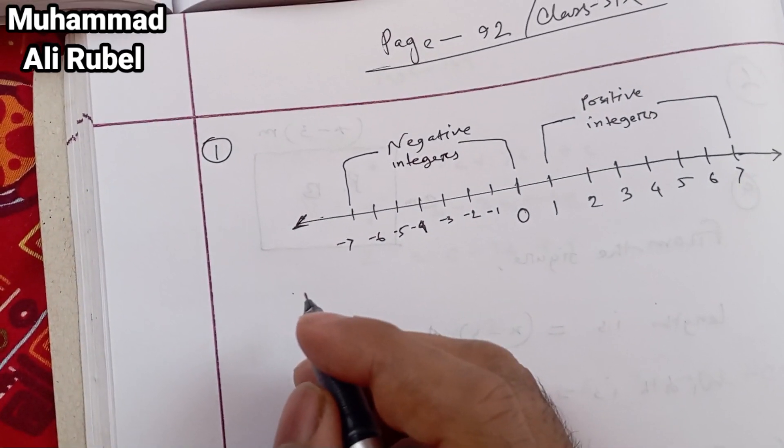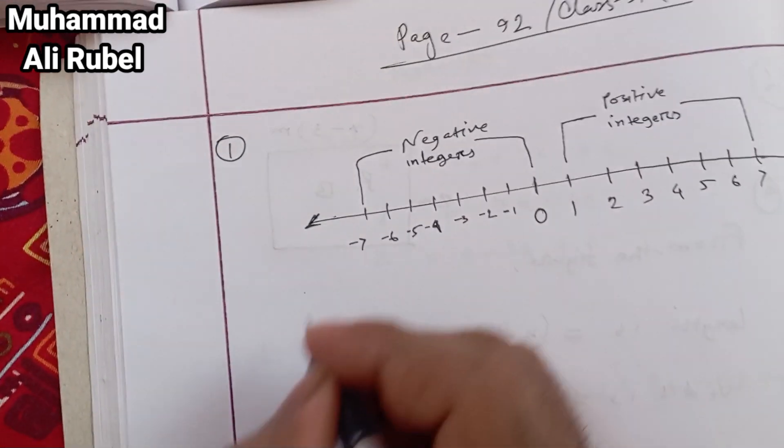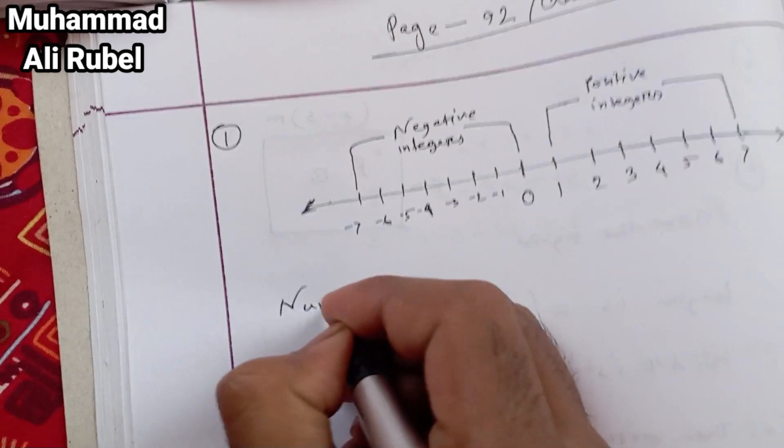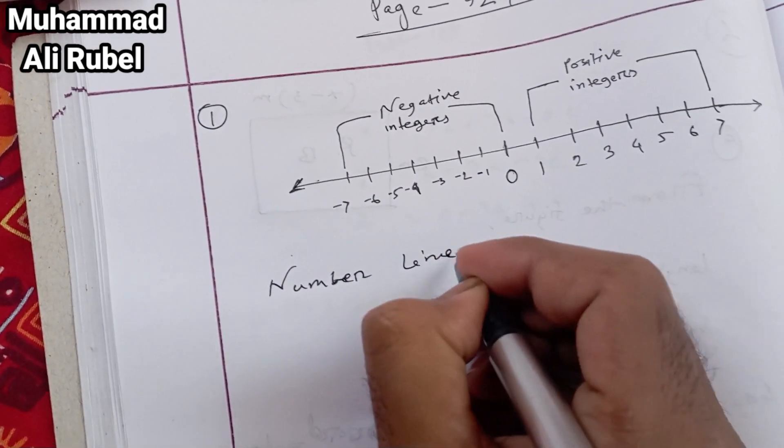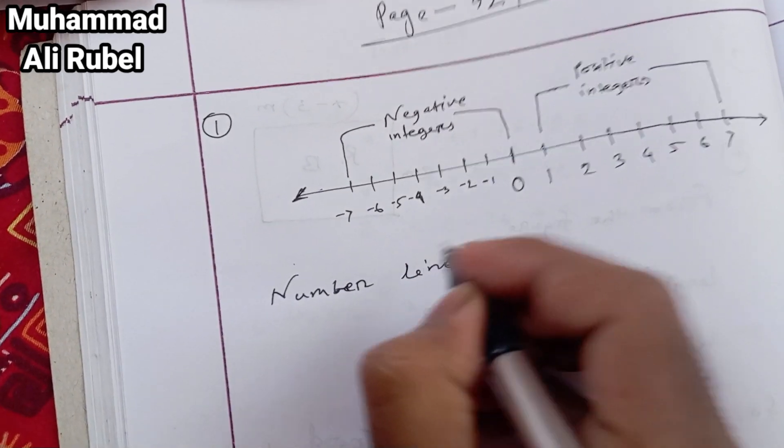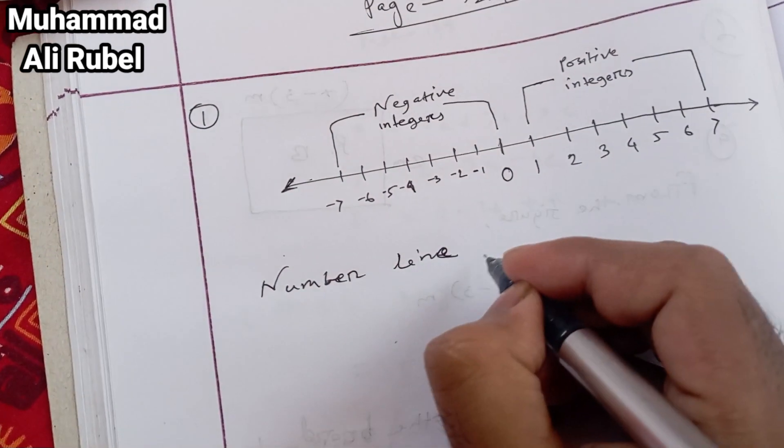Number line representing positive and negative integers.